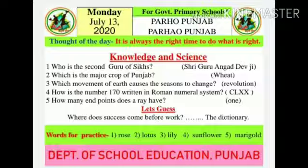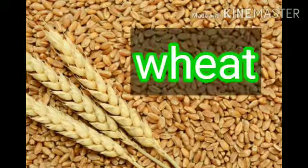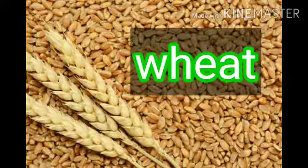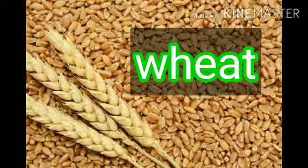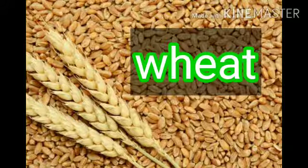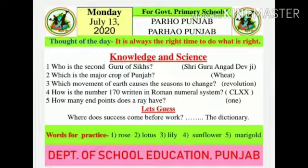Which is the major crop of Punjab? The answer is wheat. Wheat is the major crop of Punjab. It is grown in Punjab at large scale. It is a Rabi crop, and a famous harvest festival, Vaisakhi, is celebrated on the harvesting of wheat.